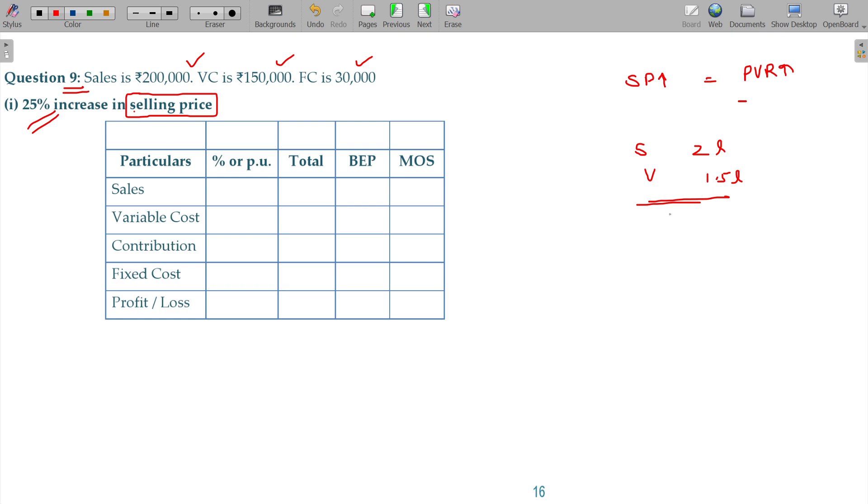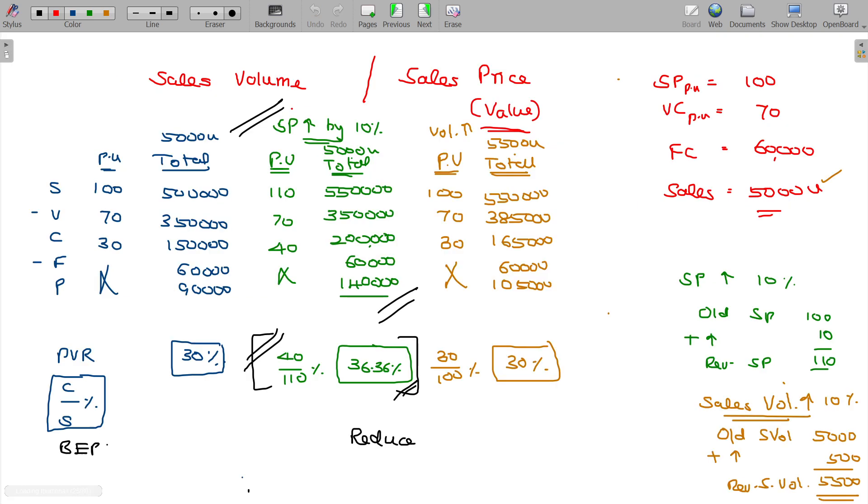Selling price, this is the change. What is the change? Selling value is the change. Variable cost, selling price, sales volume will have the impact. You will have the impact in both. Here we go.